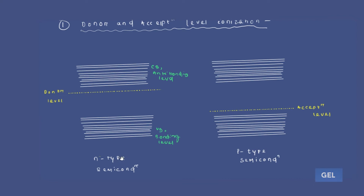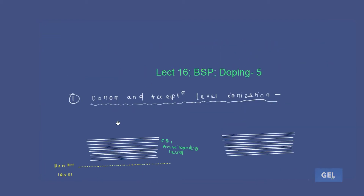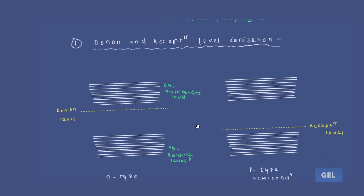There are a couple of important note points. First note point: at 0K, the pentavalent impurities in n-type semiconductor — we are only looking at the n-type at 0 Kelvin — will be present on the donor level. Now if you increase the temperature from 0 Kelvin onwards, the electrons, or the pentavalent impurities present on the donor level, will start moving to the conduction band.